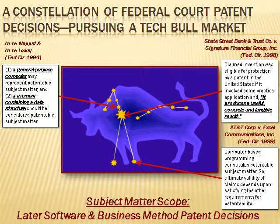Such a step-by-step process is a statutory process under the Patent Act. In this case, the court reaffirmed the State Street decision, finding that the business method exception and the mathematical algorithm exception were severely limited or, in fact, eliminated.